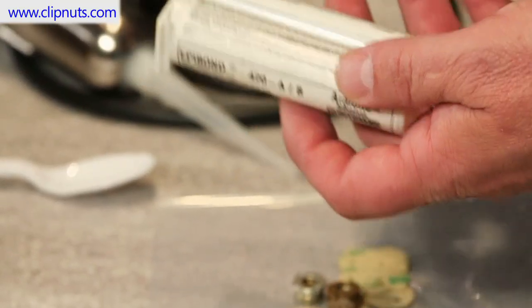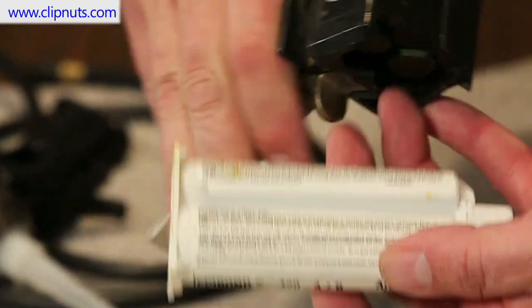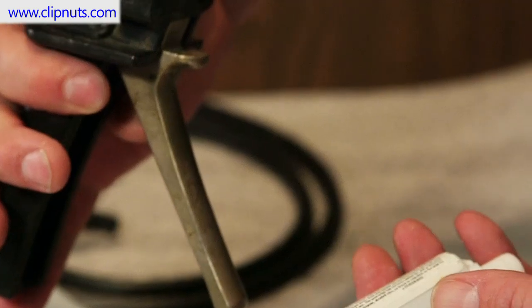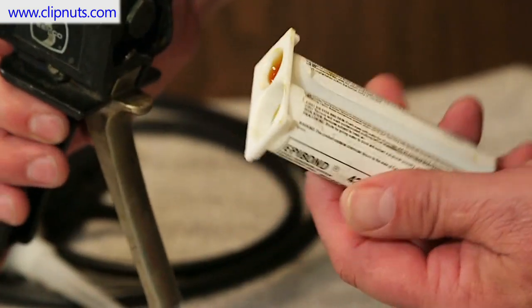The other method uses a dual-cartridge extruding gun, which automatically mixes the two adhesive epoxies in a baffle inside of the injection nozzle.